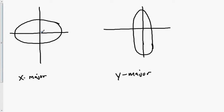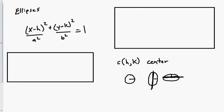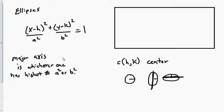How do you tell whether an ellipse is fat or tall? In this equation, if a is bigger then x is the major axis. If b is bigger, then y is the major axis. Whichever one has the bigger value dictates the major axis — specifically whichever of a squared or b squared is highest. If a squared is bigger, x is the major axis; if b squared is bigger, then y is the major axis.